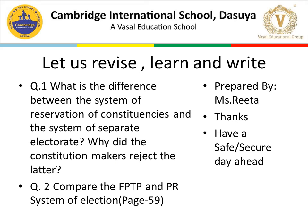Let us revise. You will write these two questions in your copy. First: what is the difference between the system of reservation of constituency and the system of separate electoral rolls — why did the constitution make us reject the latter? Second: compare the FPTP and PR systems in elections — you will find the answer on page number 59. Please understand the content before writing. In my next video I will discuss further topics from this chapter: how the election commission works, what are the drawbacks, and how we can reform the election system. Thank you very much — have a wonderful day.